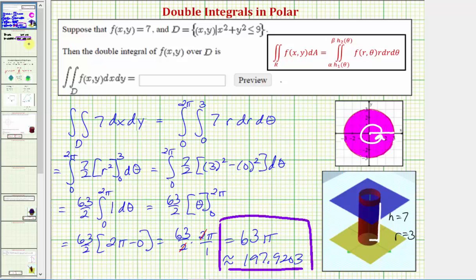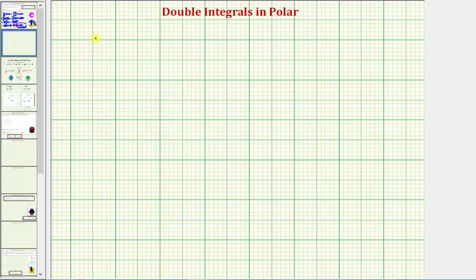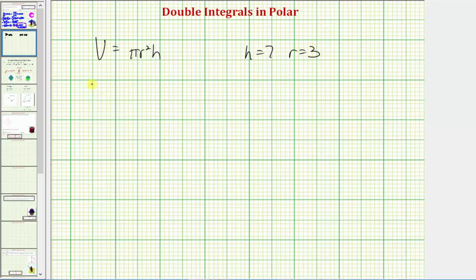So because the volume formula for a right circular cylinder is equal to pi r squared h, or the area of the base times the height, again we have h equals seven and r equals three, we'd have the volume is equal to pi times three squared times seven, which does give us the same result of 63 pi, again this would be cubic units.